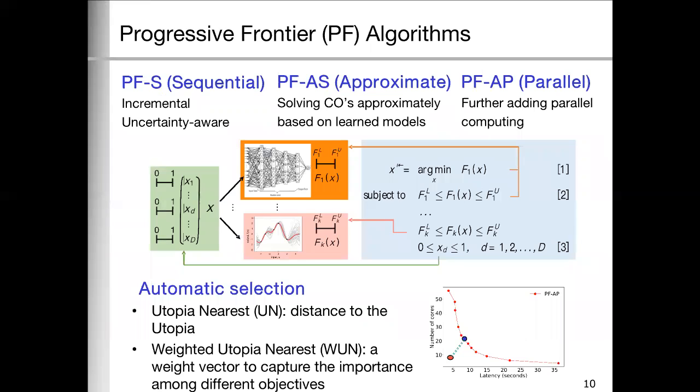We also have other algorithmic components. The PFAS and the PFAP are two approximate versions of the PF. S stands for sequential, P stands for parallel. Our MLGD solver can solve the constraint optimization problem efficiently. We also have the utopia nearest to select one Pareto point based on its distance to the utopia point. We create the utopia nearest to take into consideration of the user preference.